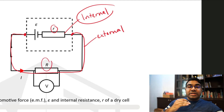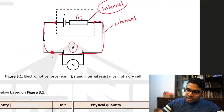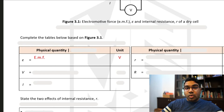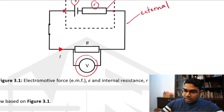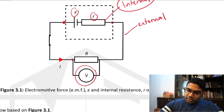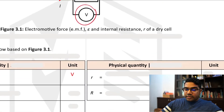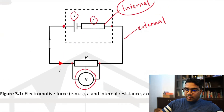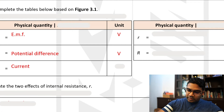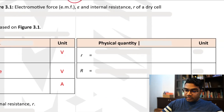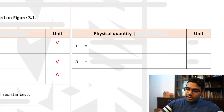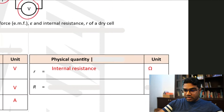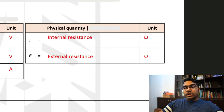We use capital R for resistance in the external circuit. E represents the EMF in volts. V is the voltage across the resistor — the potential difference across the external resistance — also measured in volts. I represents the current flowing through the circuit in amperes. Small r is the internal resistance in ohms, and capital R is the external resistance, also in ohms.